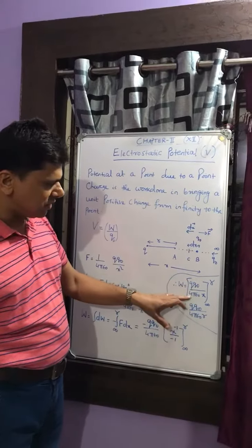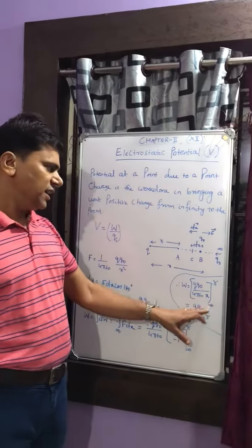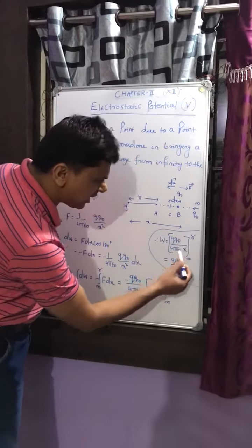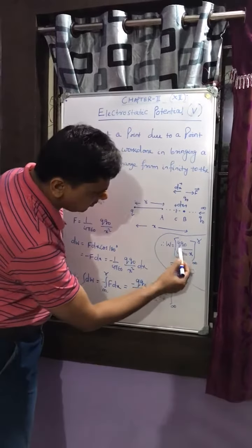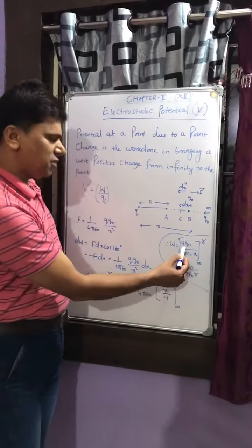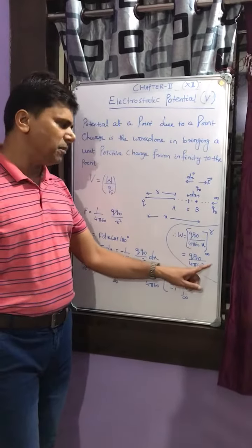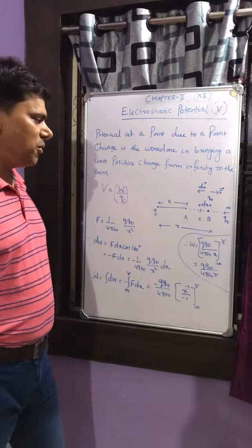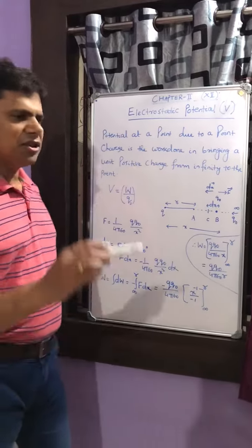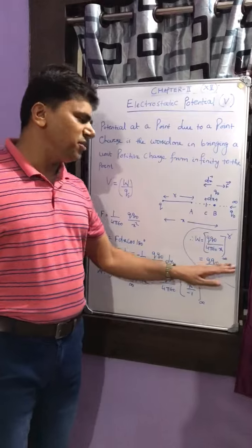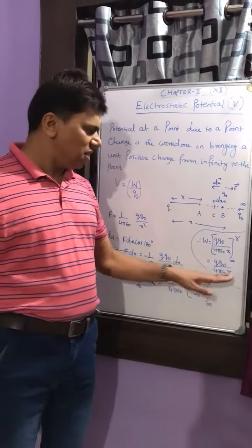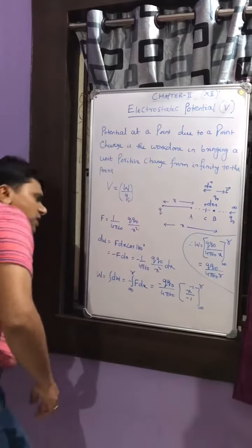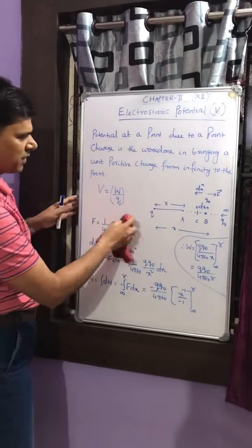Now putting in the limits, it becomes q·q₀ by 4πε₀ evaluated from infinity to r. At r we get q·q₀ by 4πε₀r, and at infinity 1 by infinity is taken as 0, so the work done W equals q·q₀ by 4πε₀r.